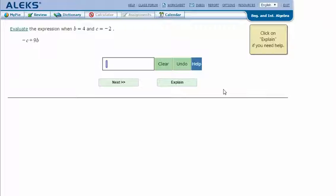Here's an example problem. Evaluate the expression when b equals 4 and c equals negative 2. The expression is negative c plus 9b.